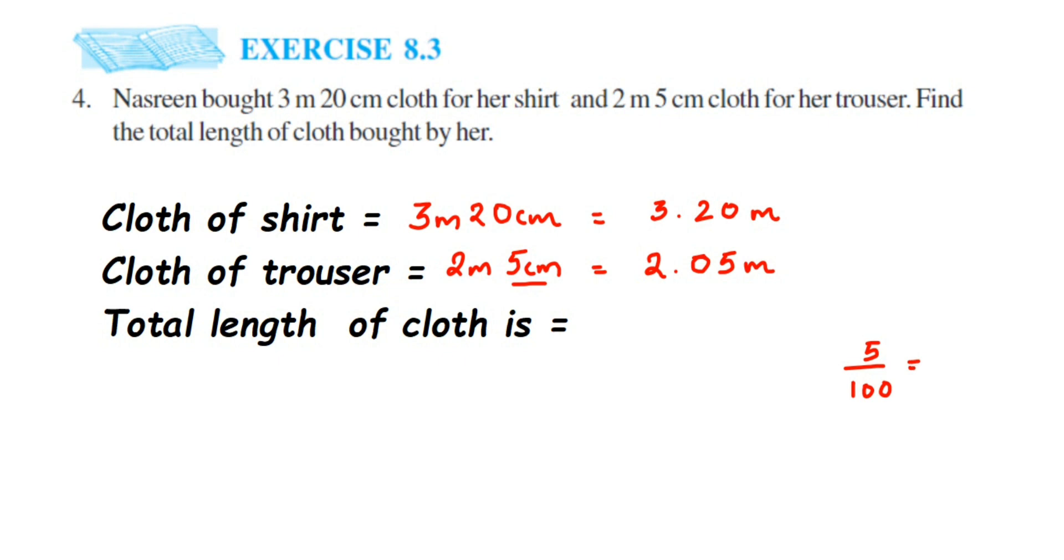And that is why you got 2.05 here. Similarly, 3.20 - how I did this? 20 divided by 100. When you do it, it will be 0.20. Yes, so I've done it directly here.